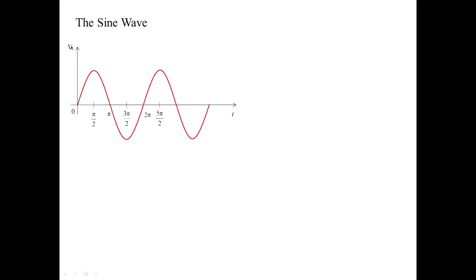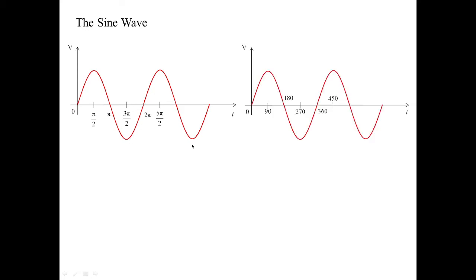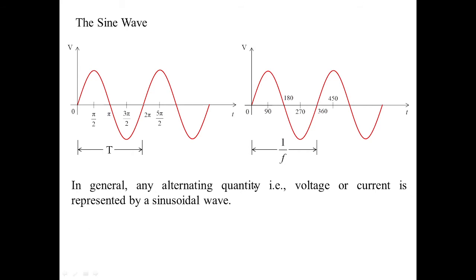Any waveform is generally designated by a sine wave. Here you can see V is the amplitude, T is the time taken on the x-axis. These are taken in radians: 0, pi by 2 which indicates 90 degrees, pi — where the waveform comes to the position where it matches with the x-axis — then it goes to the negative axis, and this is how it repeats. In general, any alternating quantity, that is voltage or current, is represented by a sinusoidal wave.